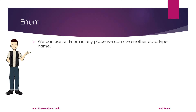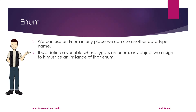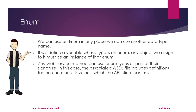We can use an Enum anywhere we'd use another data type name. If we define a variable whose type is an Enum, any object assigned to it must be an instance of that Enum. Any web service method can use Enum types as part of their signature — in this case, the associated WSDL file includes the definition for the Enum and its values, which the API client can use.